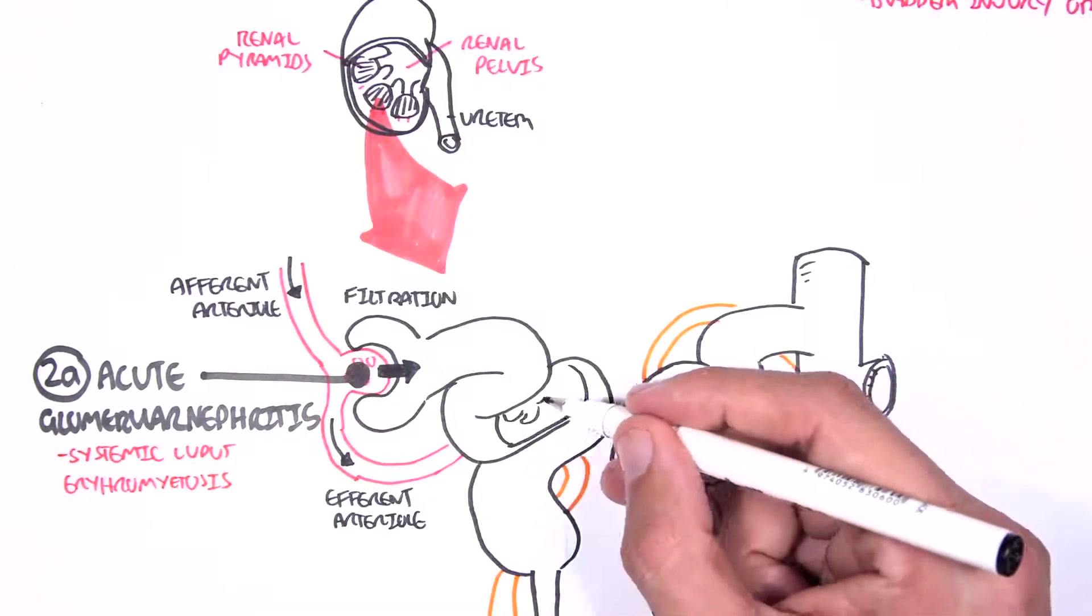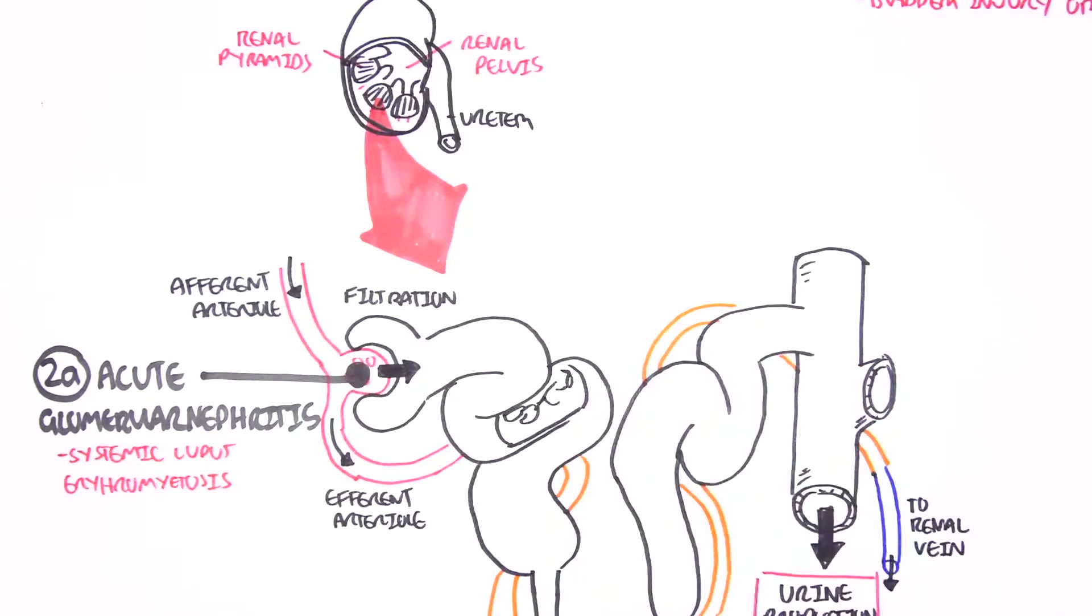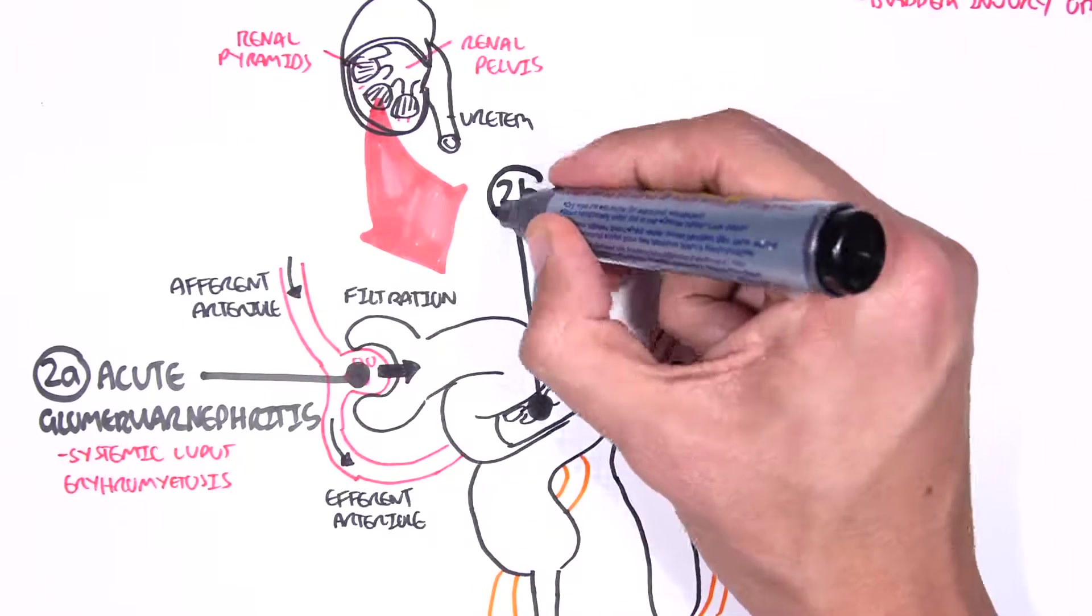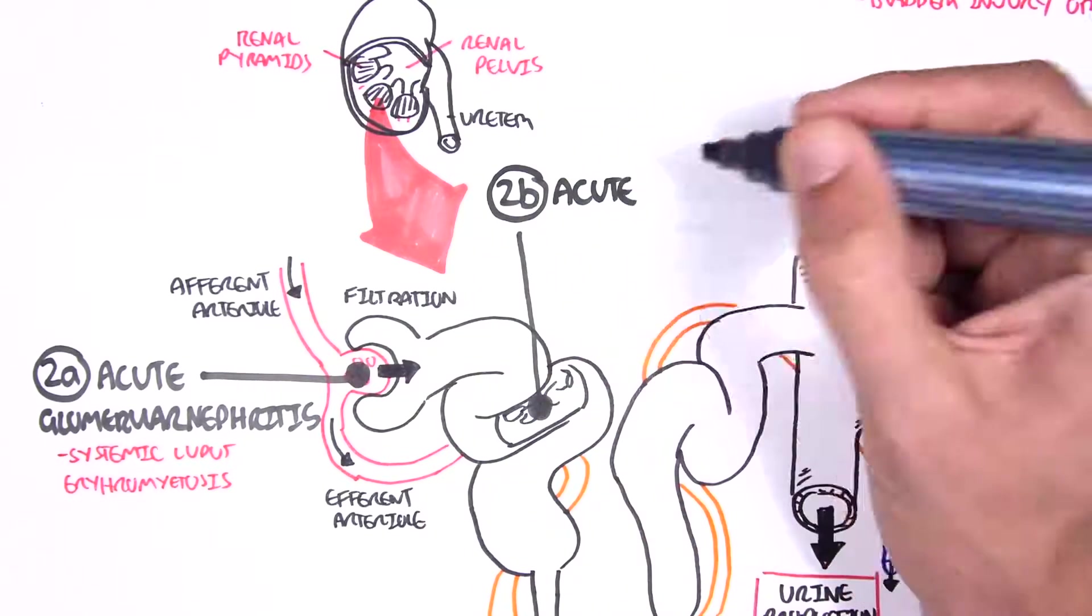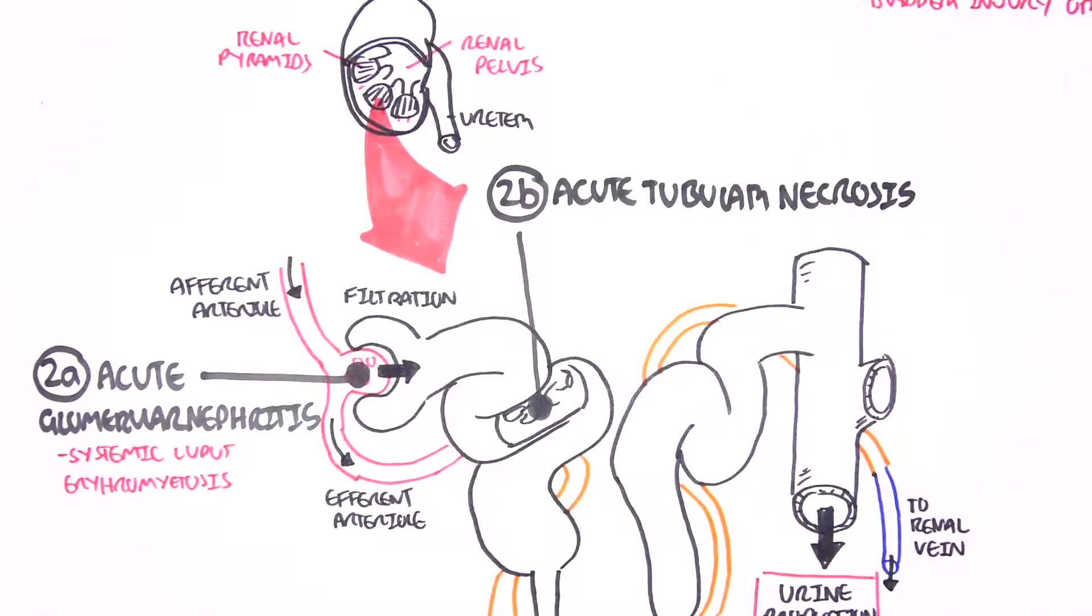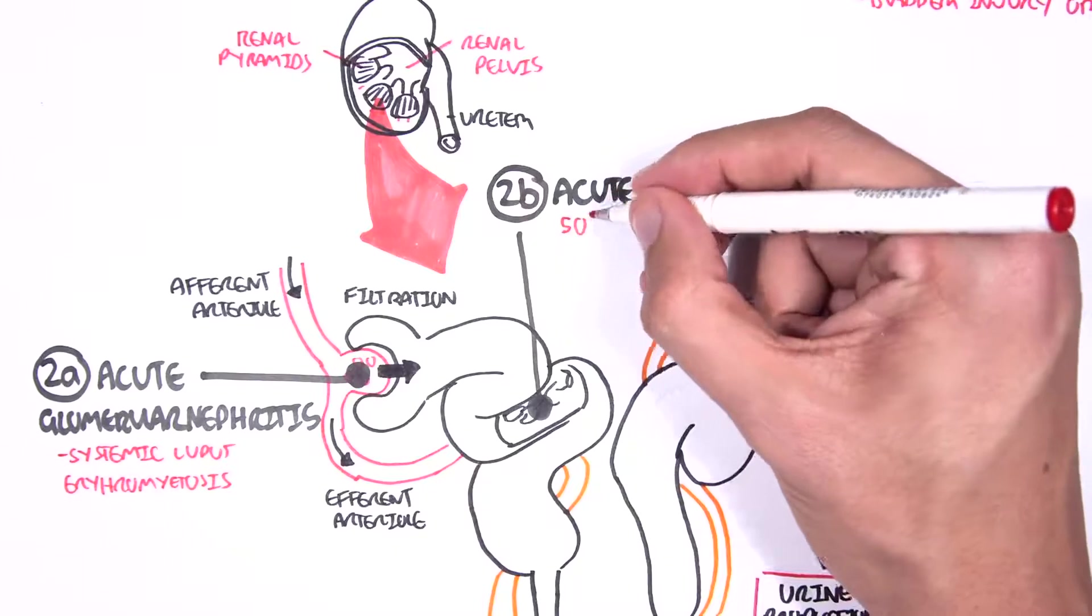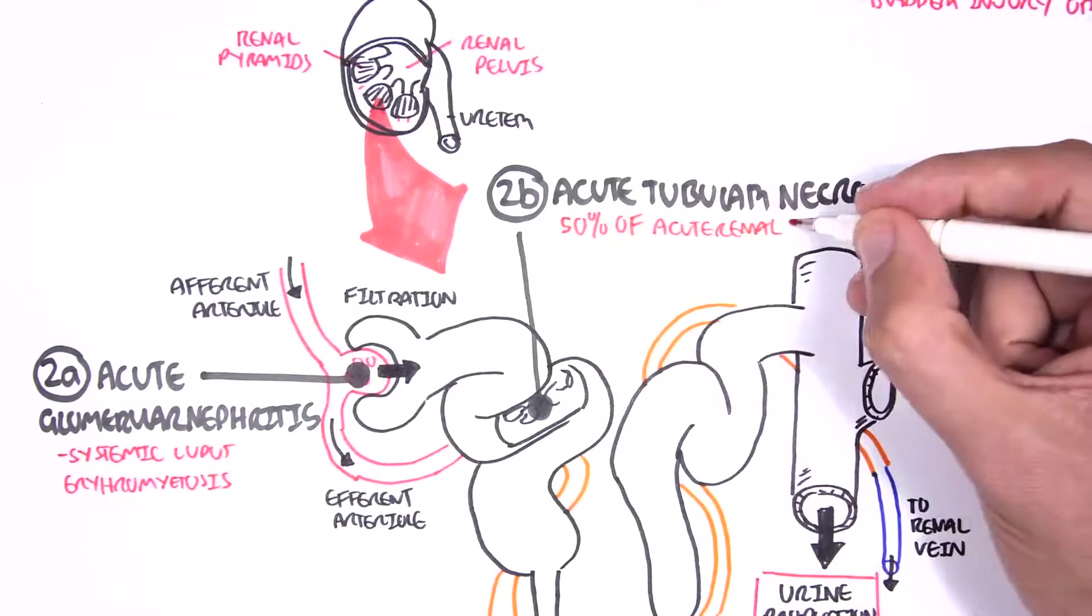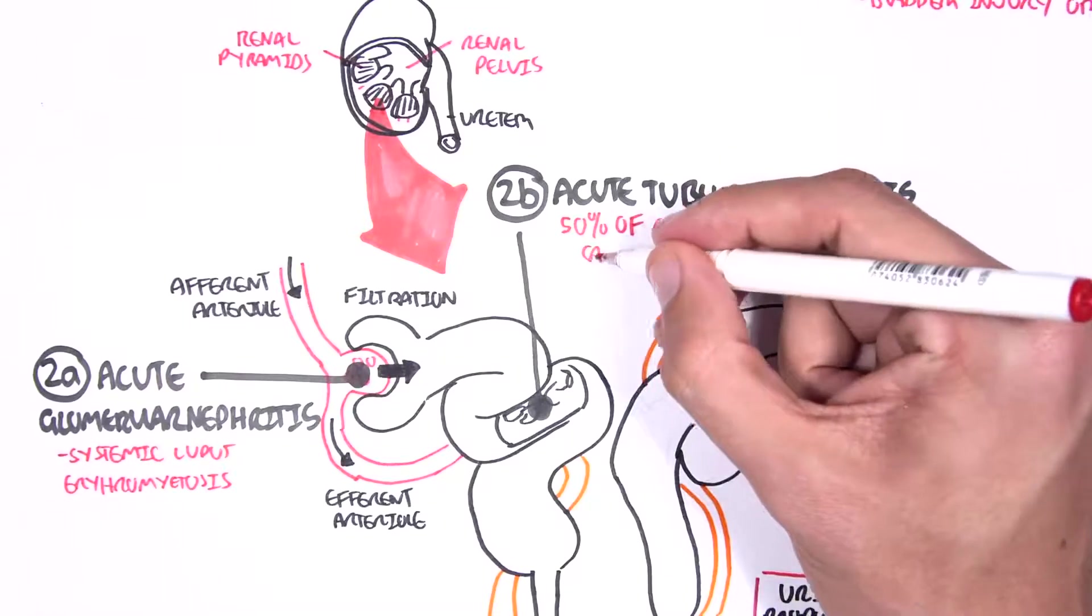The second type of intra-renal cause of acute renal failure is acute tubular necrosis. This is actually the main sign we see in acute renal failure, which is death of cells within the nephron, and 50% of acute renal failure cases have this feature.